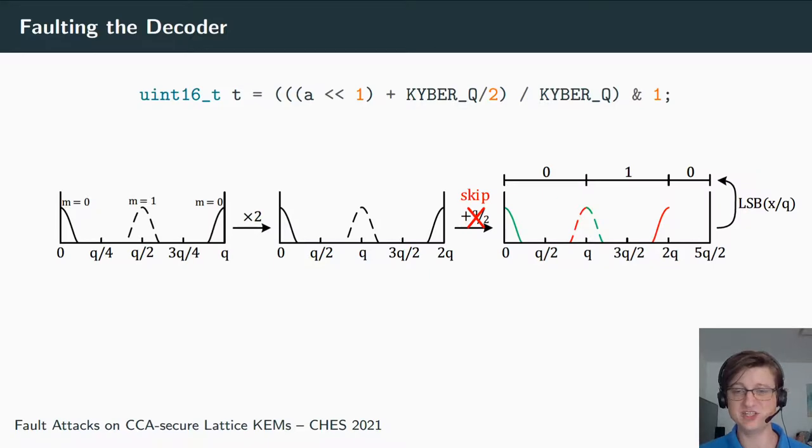If you follow the distributions here, so the solid lines belong to a bit zero and the dashed lines to a bit one, you can clearly see that all bits are correctly decoded. But what happens if we skip this one step, this addition with q/2? Well, now we have the following situation: for the positive part of this error distributions, of this kind of Gaussians, these are still correctly decoded. But the negative parts, the data on the left of the distribution, they are incorrectly decoded. So a one gets decoded to a zero, and a zero gets decoded to a one.